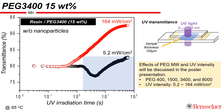Under high UV intensity, the UV transmittance continuously goes up due to the consumption of the photoinitiator. But when low intensity is applied, the UV transmittance goes down. This turbidity originates from photopolymerization-induced phase separation. When slow polymerization occurs from low UV intensity, the PEG has enough time to phase separate.